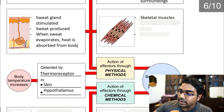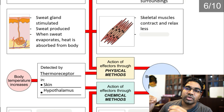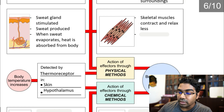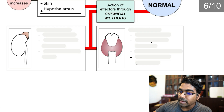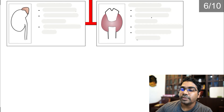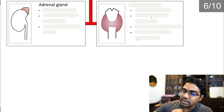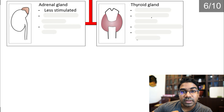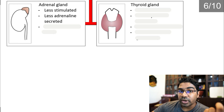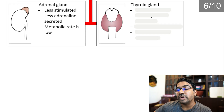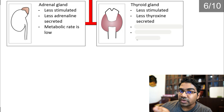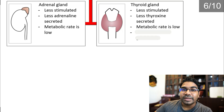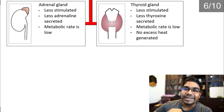Skeletal muscles are less stimulated to contract and relax, so no shivering occurs and no heat is generated. For the chemical methods, two glands are involved: the adrenal gland and the thyroid gland. When it is hot, the adrenal gland is stimulated less, producing less adrenaline, so the metabolic rate is low. Similarly, the thyroid gland is less stimulated, producing less thyroxine, so the metabolic rate is low and no excess heat is generated.